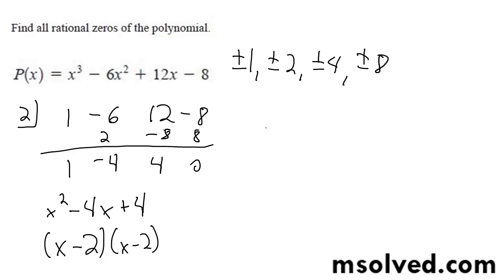So it looks like I actually have a triple root here, so my solution here is x is equal to negative 2, negative 2, and negative 2.